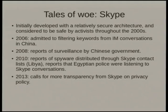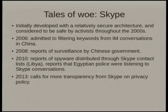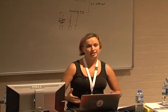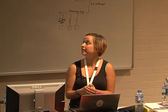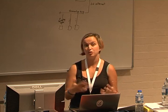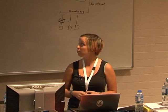Skype is also important because activists thought of it as being secure until recently, so lots of people used it who weren't willing to use mobile phones or landlines. In 2006 it admitted to filtering keywords from IM conversations to meet Chinese law. There have also been reports of it being used for surveillance by the Chinese government, and in 2010 reports of problems in Libya and Egypt. Just a few days ago there were more calls for transparency from Skype. This highlights the problem of relying so much on a tool which activists don't control. A lot of people still need cheap, secure international communications, and there's not really anything available that does that well.